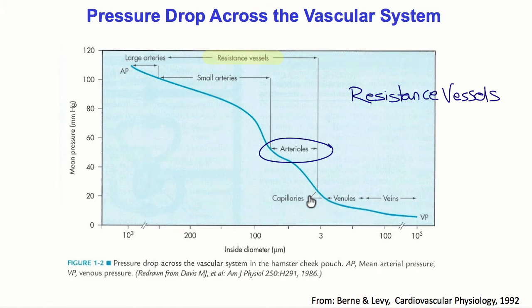As we continue down the circulation to the capillaries and then back to the veins, the pressure drops are smaller, only because by now three quarters of the pressure has already dropped, and so there isn't much additional capacity for further pressure drops.